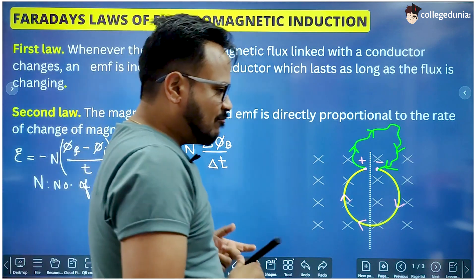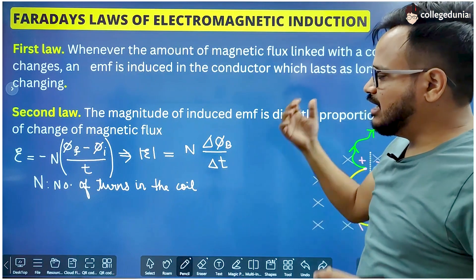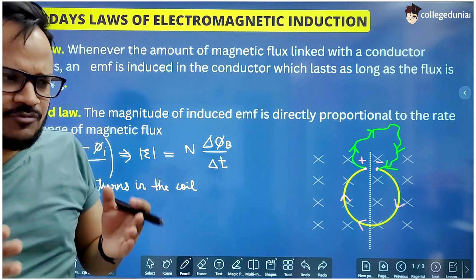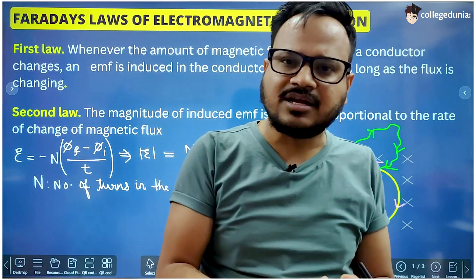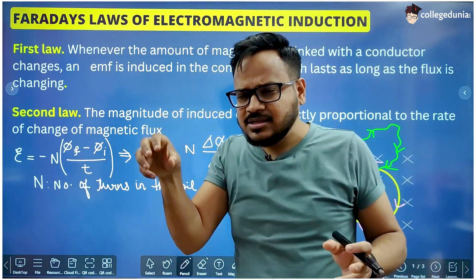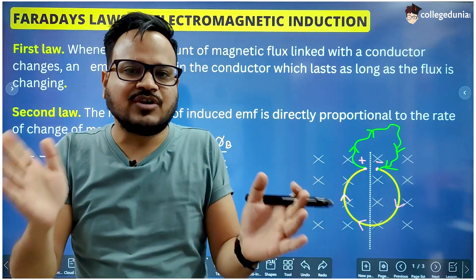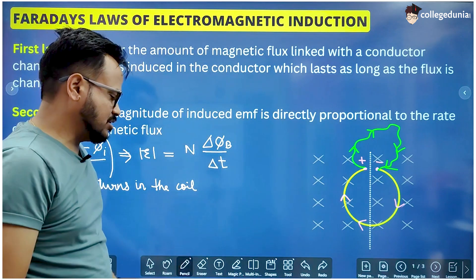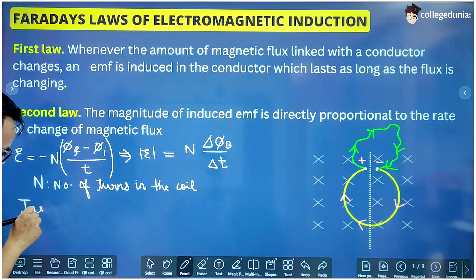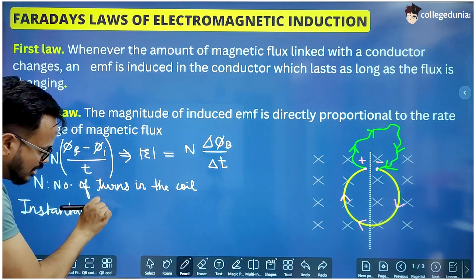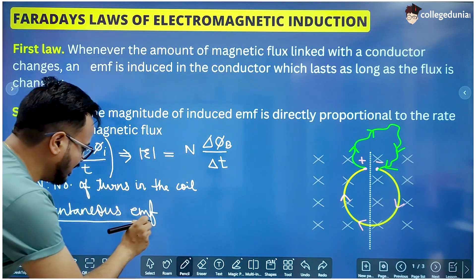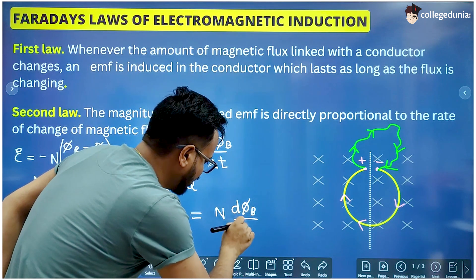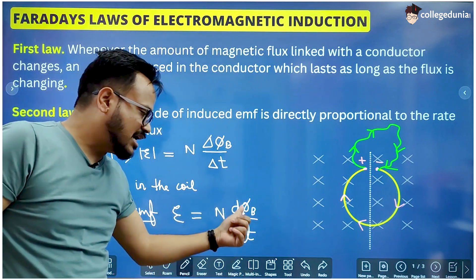This gives the average EMF because, suppose you take a time of five seconds — in the first second the change in flux may be different, in the second second something else, and so on. We are not going into instantaneous details; we are just taking the average change in flux over five seconds. So this gives the average EMF induced in the coil. If you want the instantaneous EMF, it is simply N·dφ/dt — you take the derivative of the flux function given as a function of time.